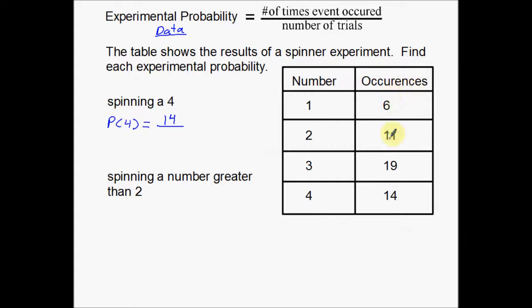Now to do this for the number of trials, what we have to do is take all these occurrences and add them all together. 6 and 14 is 20, 11 and 19 is 30, so I got 20 and 30 to make a total of 50. So add those numbers together quickly. And then that would be, reduce that to 7 over 25.